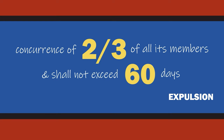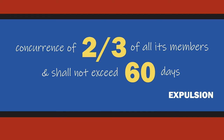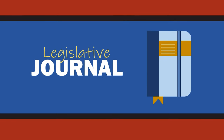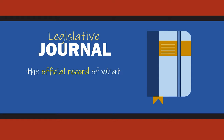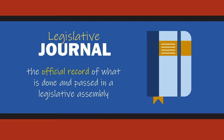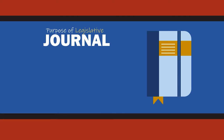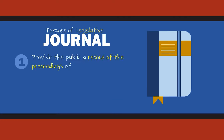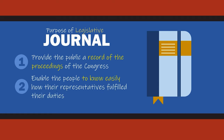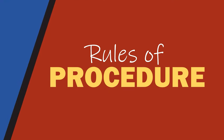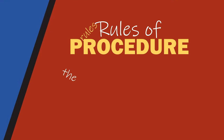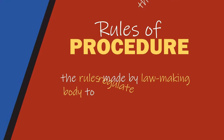Now let's talk about the legislative journal. It is the official record of what is done and passed in the legislative assembly. The primary purpose of the legislative journal is to provide the public a record of the proceedings of Congress and to enable the people to know how their representatives fulfill their duties.